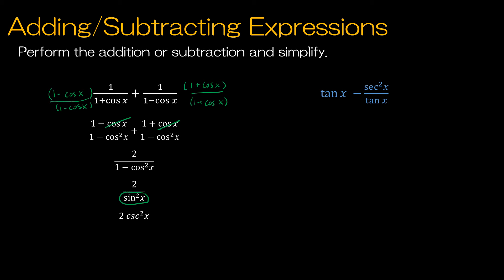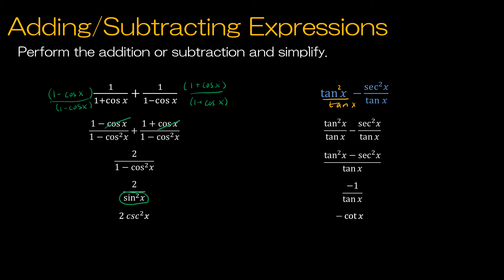For the second question, multiply by tangent on both numerator and denominator to get a common denominator. The numerator becomes tangent squared x minus secant squared x, and using the Pythagorean identity that equals negative one. Since one divided by tangent of x is cotangent of x, the final solution is negative cotangent x.